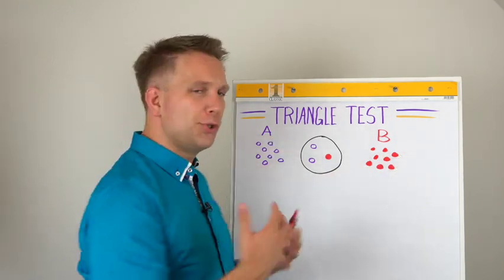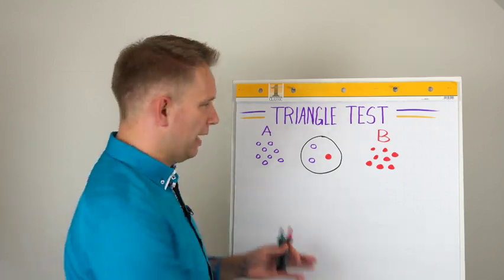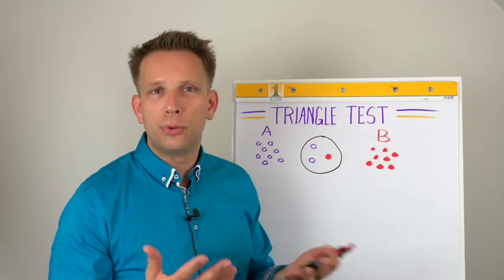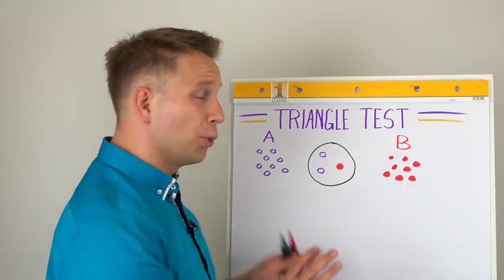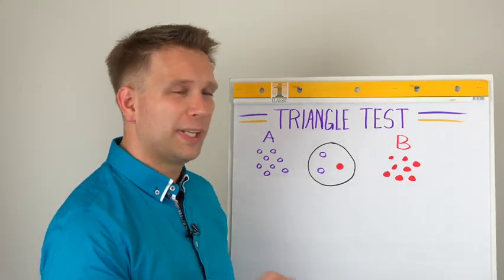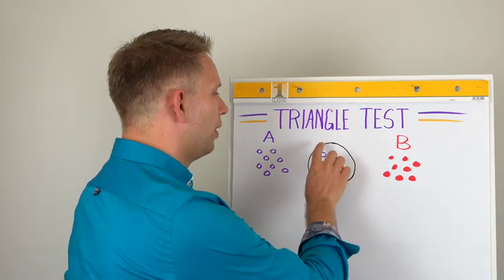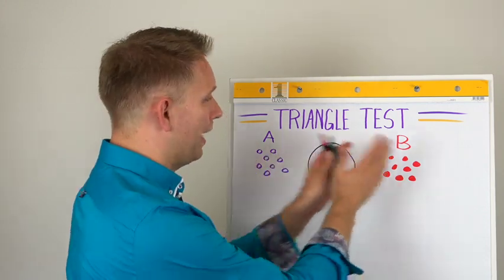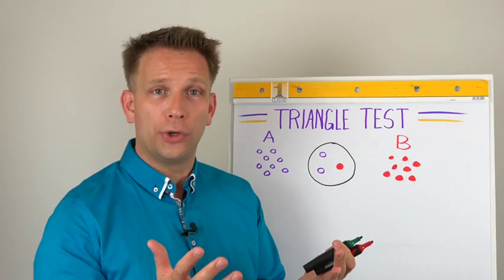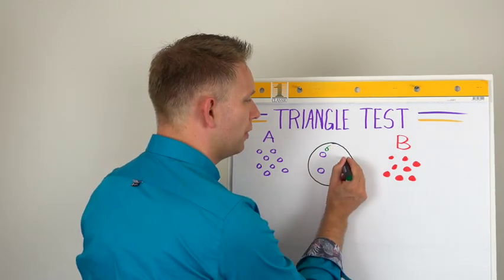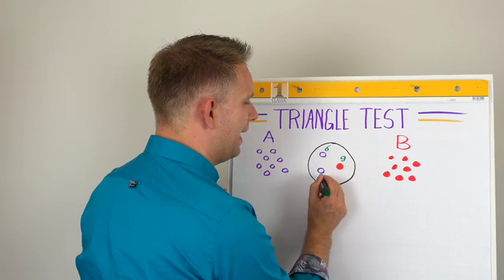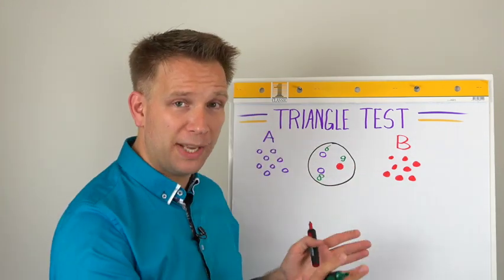So you've got two big samples, right? So you have your normal production and you have your new recipe or your new production parameters. What you do, unbeknownst of course to your test subjects, is you put two of product A and one of product B on their plate. You label them something neutral like 6, 9 and 8. So they don't know which one comes from which batch.